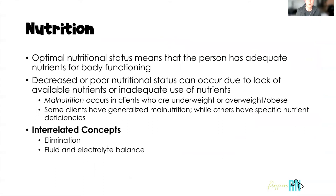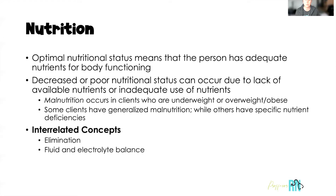Sometimes you'll hear us use the phrase 'optimal nutrition status,' which means the client has adequate nutrients for optimal body functioning. Unfortunately, many clients we care for have decreased or poor nutritional status — due to lack of available nutrients, inability to afford healthy foods, or inadequate use of nutrients such as in a malabsorption disorder. Malnutrition is a general term for clients who are underweight or overweight. When overweight or obese, clients are likely getting too much fat and carbohydrates and not enough vitamins, minerals, and variety from all five food groups — the same issue applies to clients who are underweight.